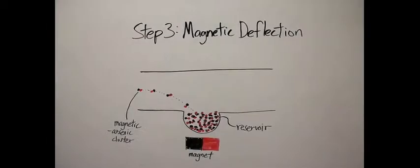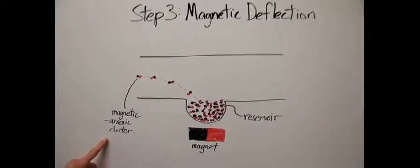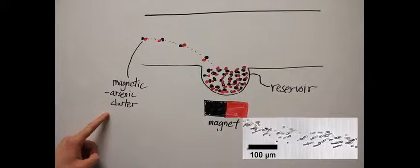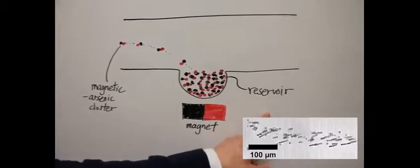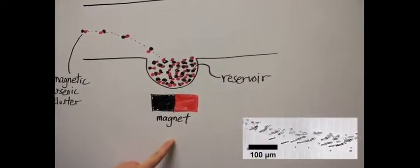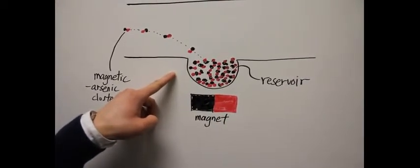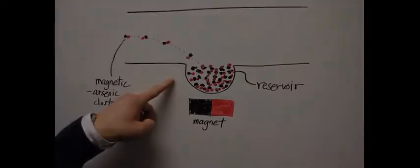In step 3, the suspension of magnetic arsenic particles flows through the microfluidic device and is deflected to a side reservoir by an embedded magnet. We will design the reservoir in such a way that if it is completely filled, it indicates an arsenic concentration above the toxic limit.